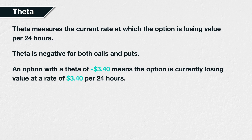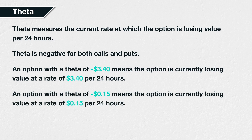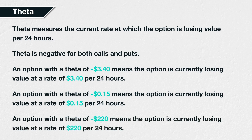It's worth mentioning that this rate is not static, so the loss in value is not linear over the life of the option. An option with a theta of minus 15 cents means that the option is currently losing value at a rate of $0.15 per day. An option with a theta of minus $220 means that the option is currently losing value at a rate of $220 per day.